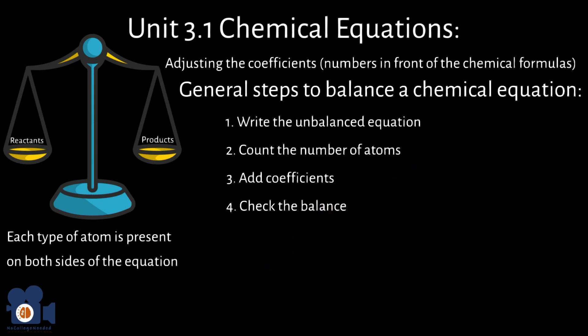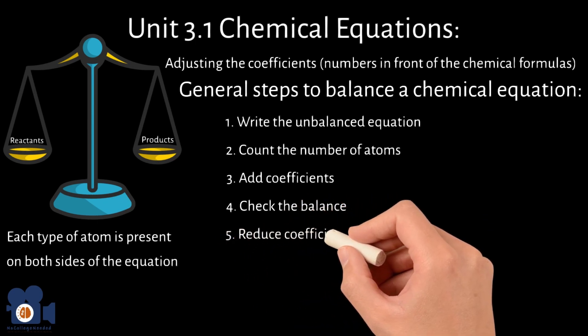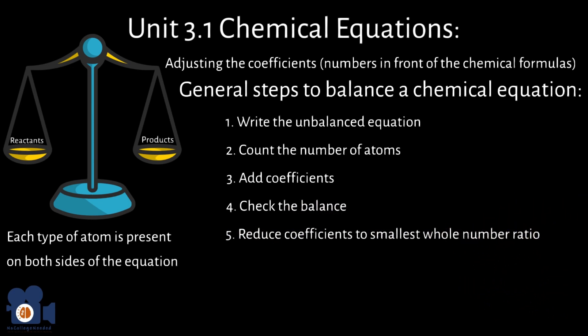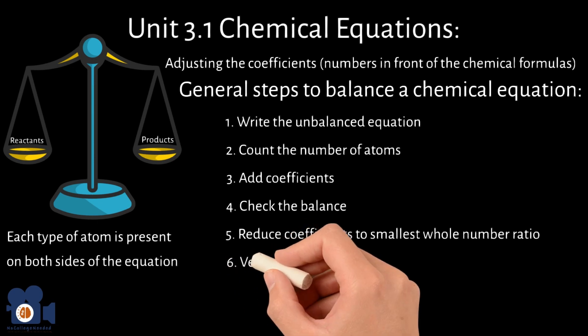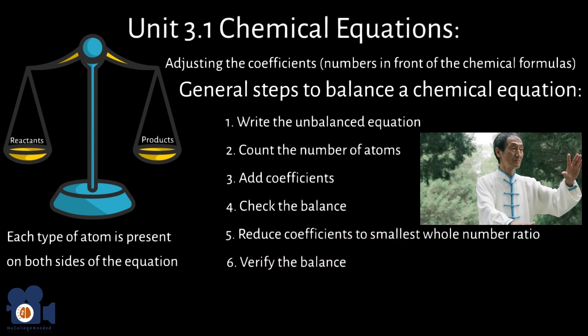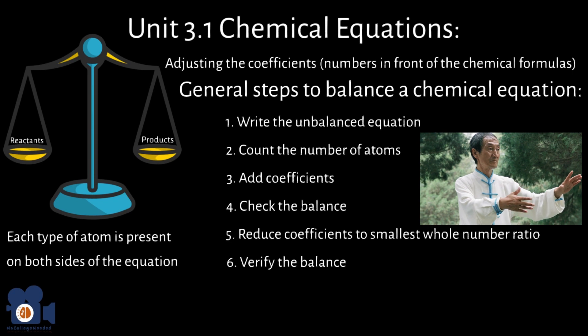Make sure that the number of atoms of each element is the same on both sides of the equation. Step 5: Reduce coefficients to the smallest whole number ratio. If any coefficients are fractions, multiply all coefficients by the denominator to get rid of the fraction and make them whole numbers. Step 6: Verify the balance. Double-check that the equation is balanced by counting the number of atoms of each element again.